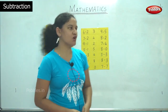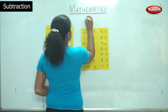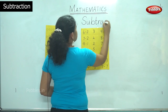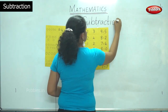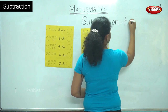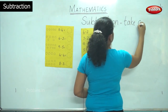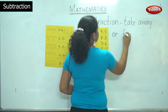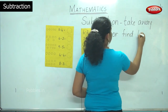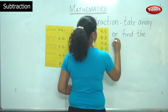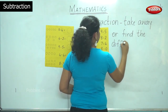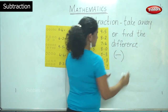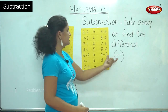Now we are going to see a simple method of subtraction. As we have already learned, subtraction is to take away or find the difference. Minus is the sign or the symbol that we use for subtraction.